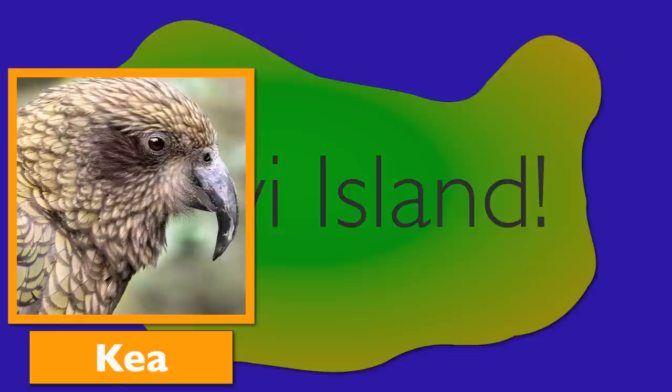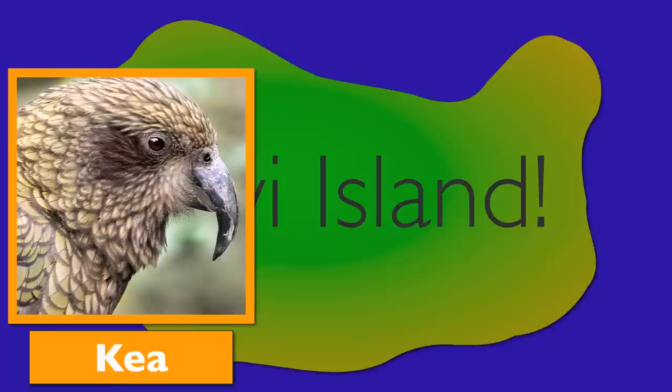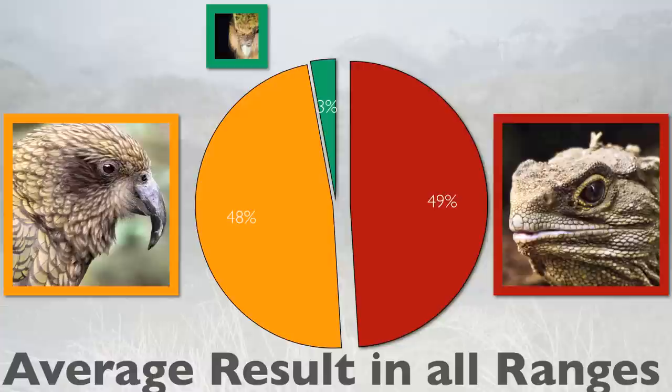On this island, there are three political parties: the two big ones, Kia and Tuatara, and a small third party, Kakapo. On election day, the citizens each cast one vote for a local candidate they want to represent the range they live in. The results are as follows.